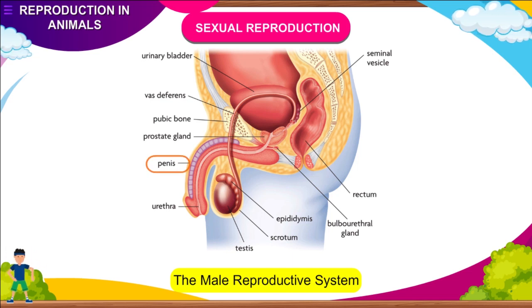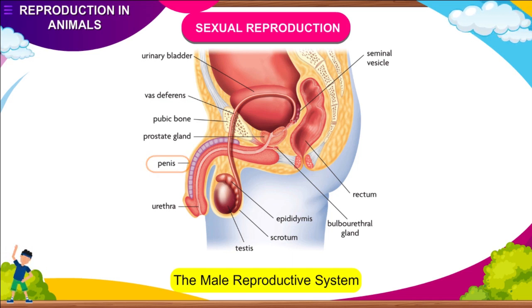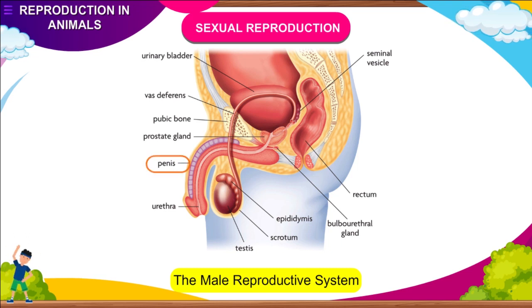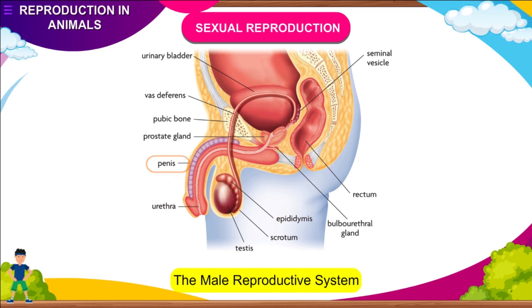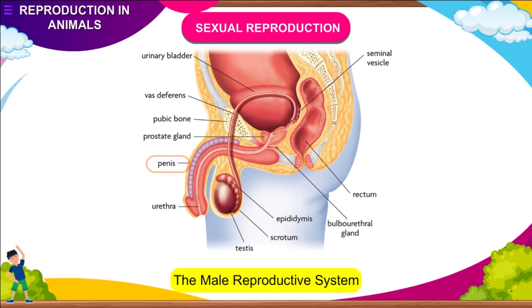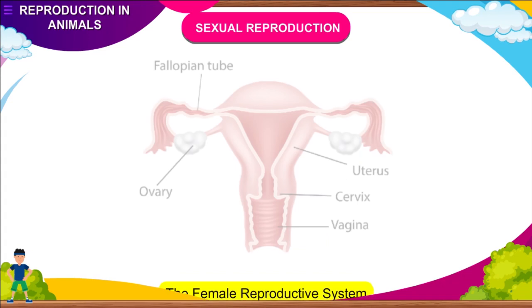The penis is the common way out for the urine as well as the semen. An average human male starts producing sperms at the age of around 14 to 15 years.